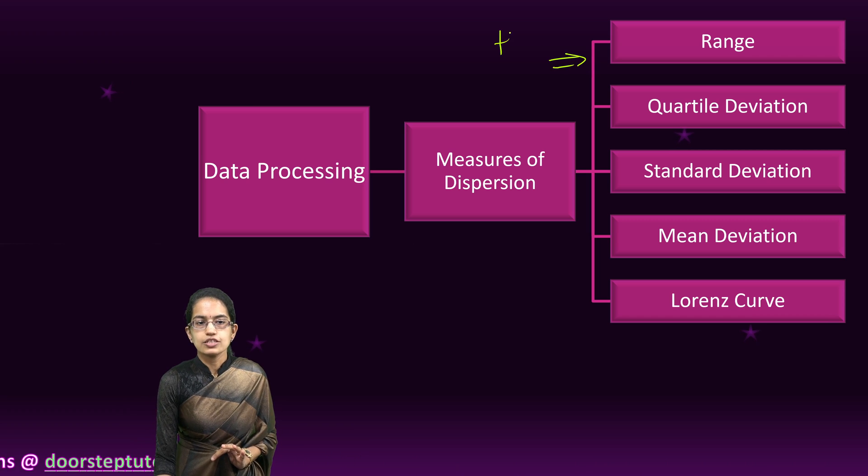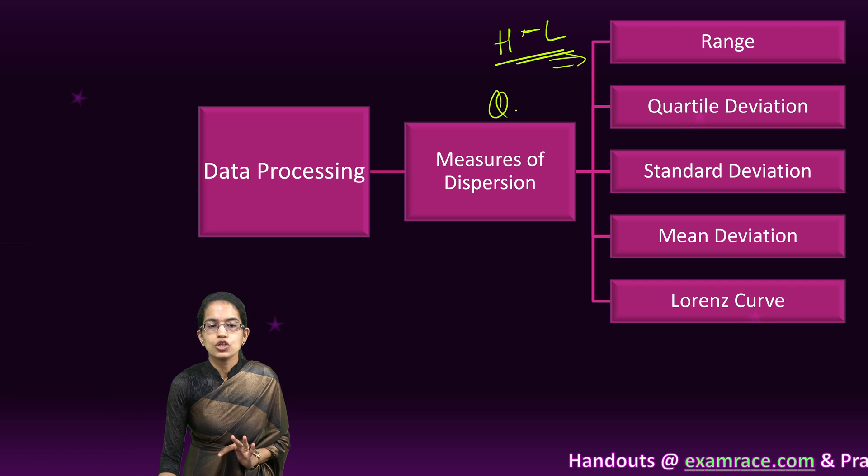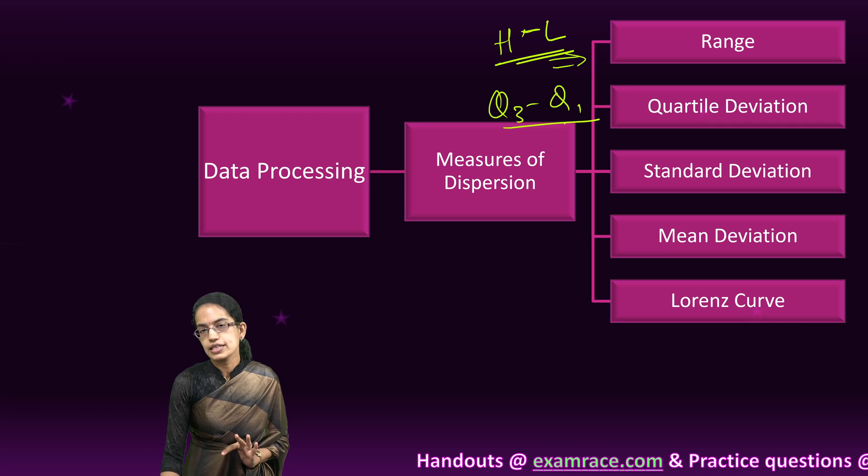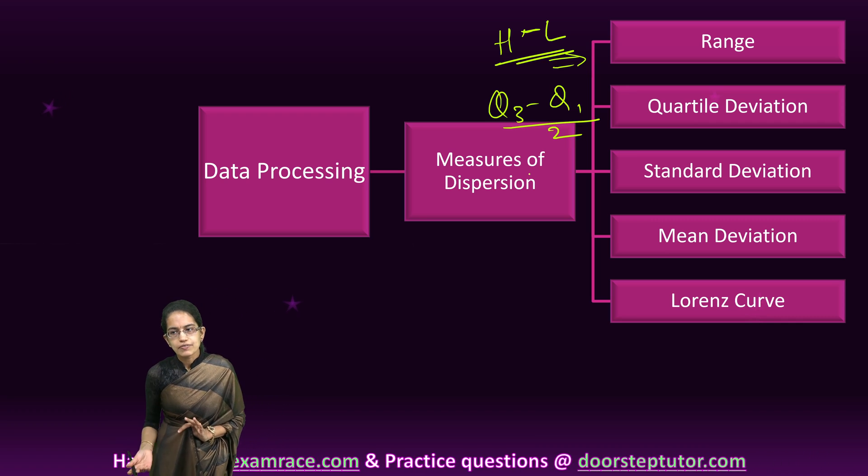The highest value minus the lowest value would give you the range. Quartile deviation is Q3 minus Q1, the quartile 3 minus quartile 1 divided by 2, which gives you the quartile deviation.